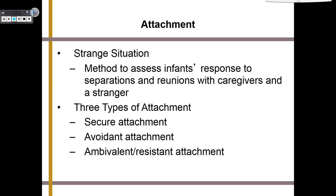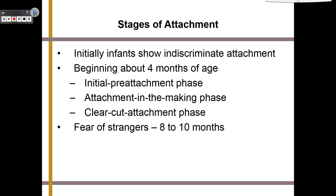Infants initially show indiscriminate attachment — they will just be friendly to anybody. But beginning about four months of age, they develop the initial pre-attachment phase. Then they make that attachment during the attachment-in-the-making phase. By about eight to ten months, they have clear-cut attachment, meaning they are clearly and obviously attached to their caregiver, and they'll have a healthy fear of strangers.